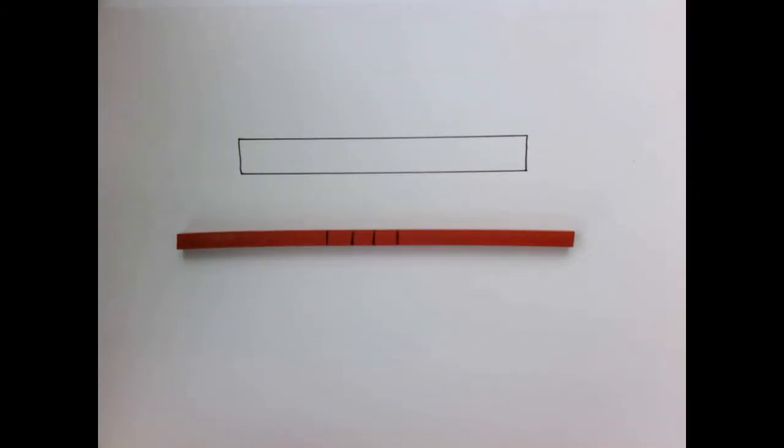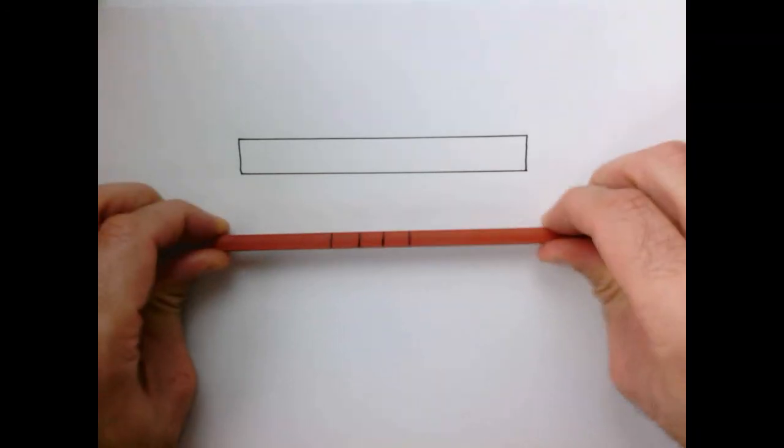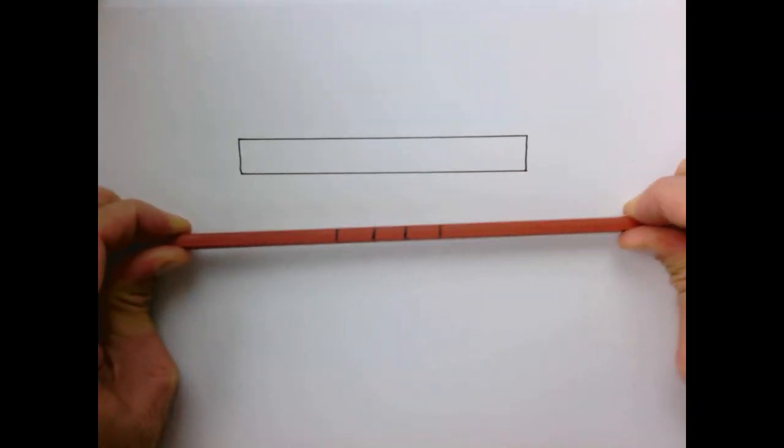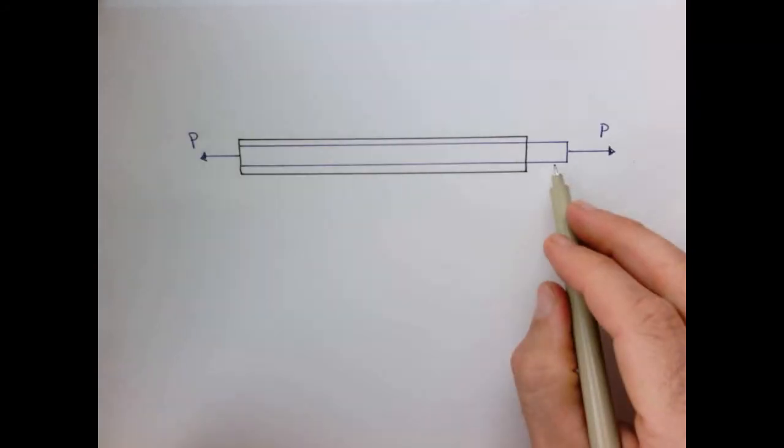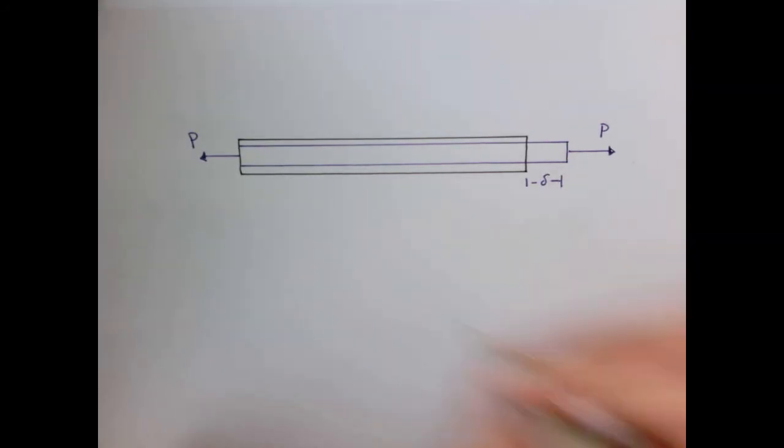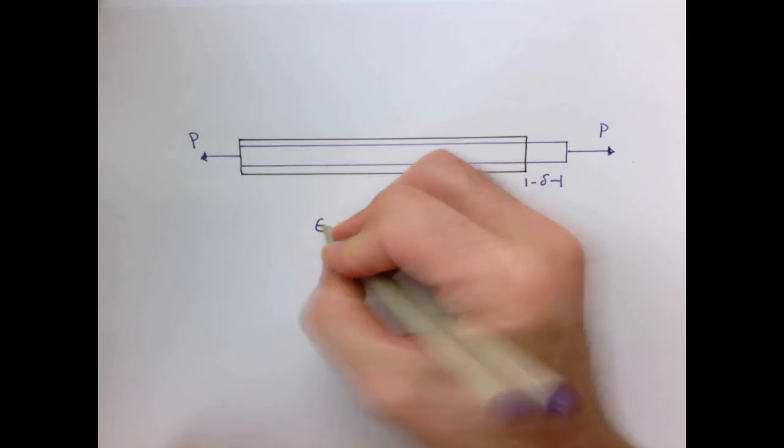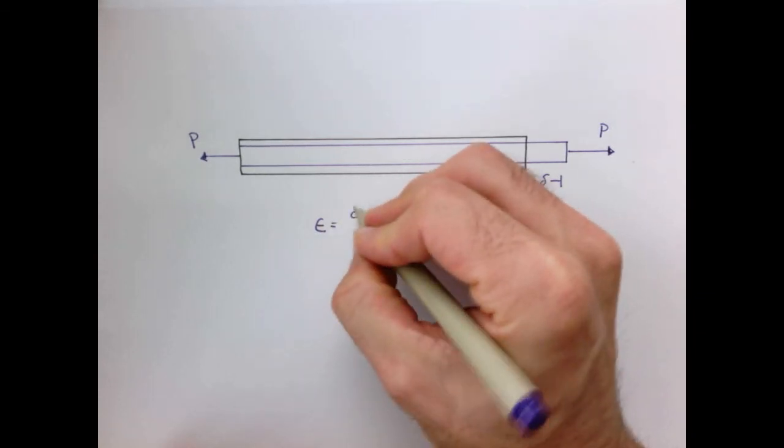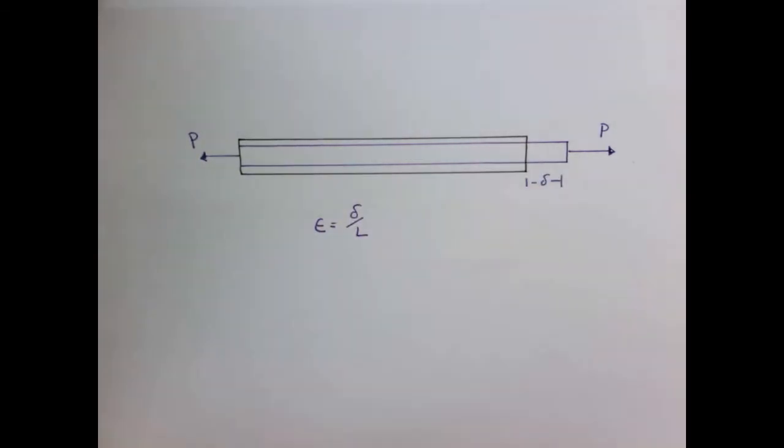So now let's quantify the effect that if I take my bar and I apply a load, not only does it get longer, but it gets skinnier. So here's my generic bar. So in the new drawing here, not only has the bar got longer, but it's got skinnier. It's lengthened by an amount delta. So therefore, the strain, we say, is delta over L, where L is the original length of the bar.